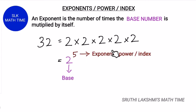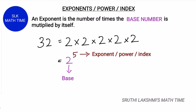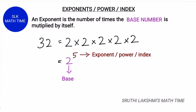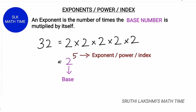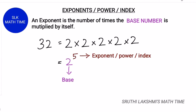The exponent can also be called the power or index. The exponent is usually written at the top right corner of the base, in a smaller size when compared to the base. This can be read as '2 power 5', '2 to the power 5', or '2 raised to the power of 5'. This method of representing a number is called exponential form.